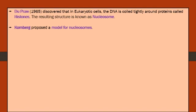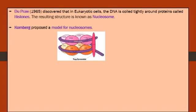Kornberg proposed a model for nucleosomes. In the nucleosome, histone proteins are arranged in two discs — an upper disc and a lower disc. Each disc contains four histone proteins, making a total of eight histone proteins called a histone octamer.